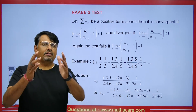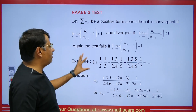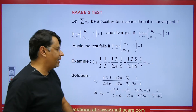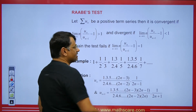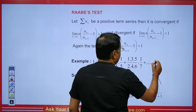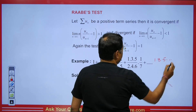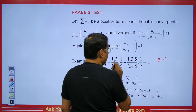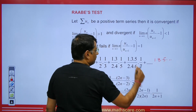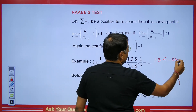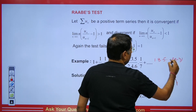Now let's discuss how we will solve the first question. First, we will find the nth term. Here the numerator has 1, 3, 5 — since it's an odd sequence, it will be 2n − 1. If you need to check, replace n with 2: 4 − 1 equals 3, which is correct.